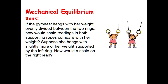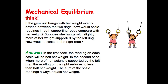Look at this picture. Starting with the left one: if the girl hangs with her weight evenly divided between the two rings, as in the left picture, what is the scale reading in both supporting ropes compared with her weight? Because her weight is evenly divided, you would expect that each rope will read half her weight.